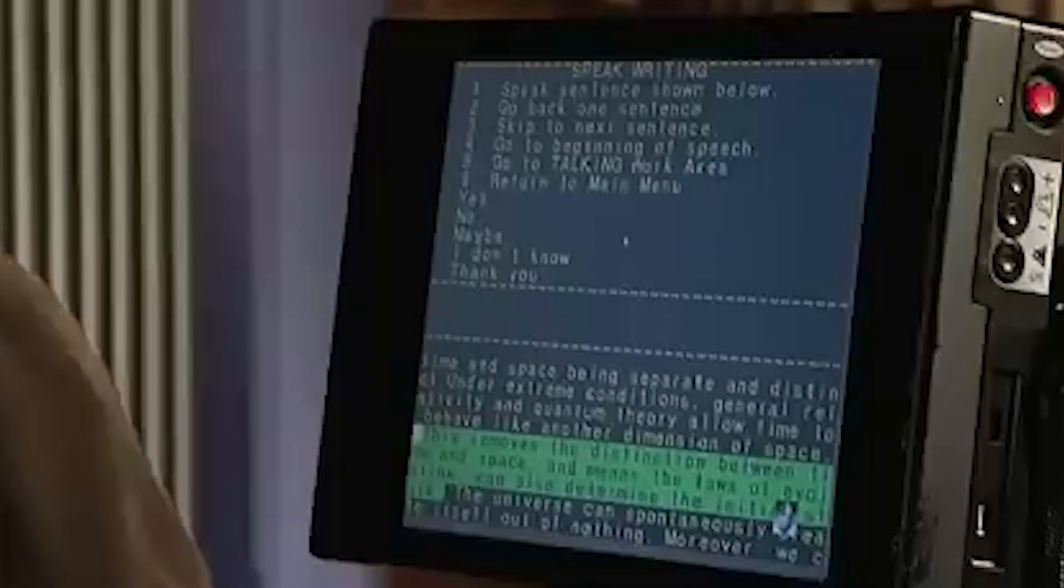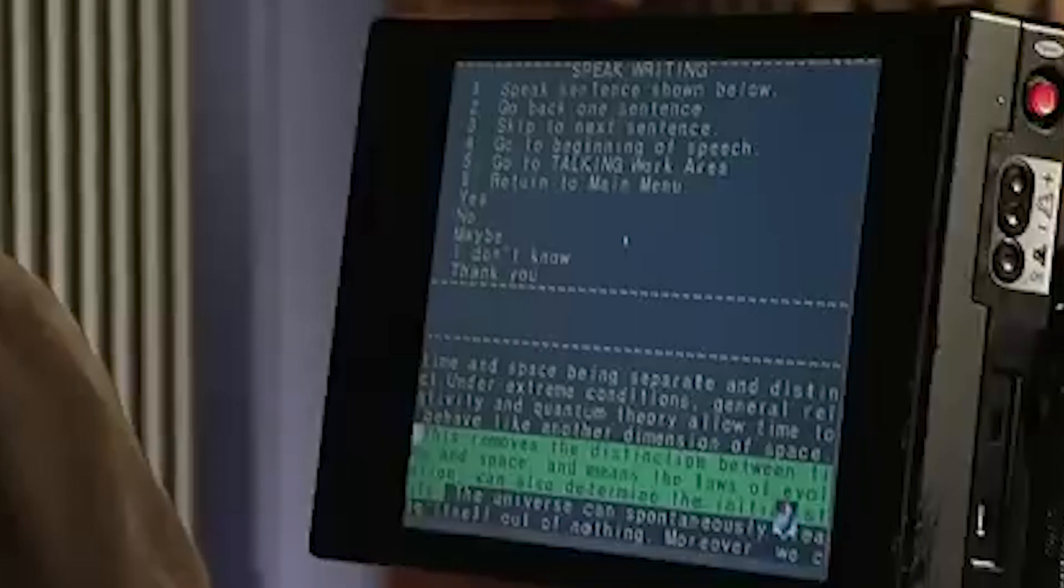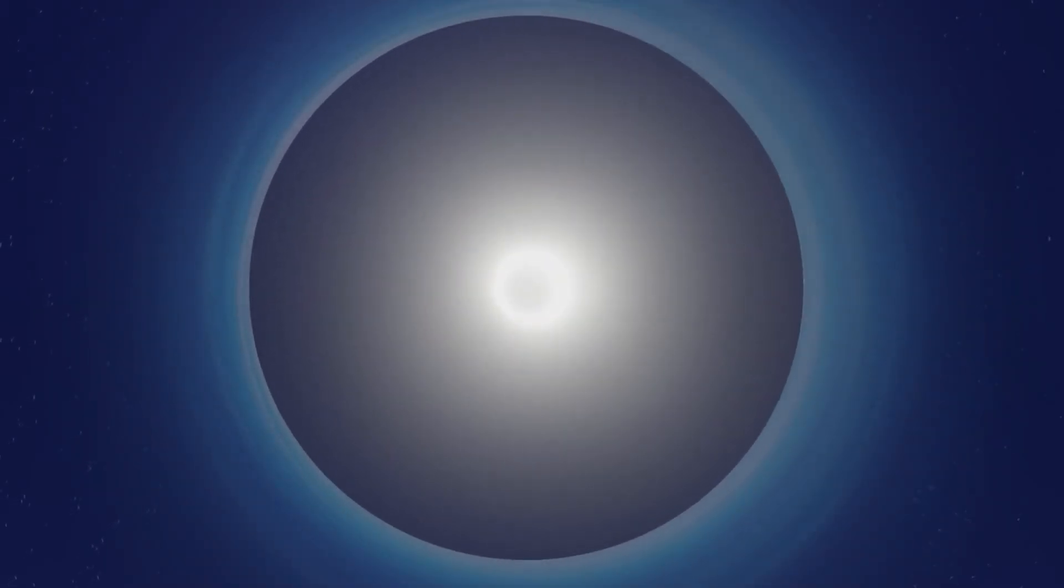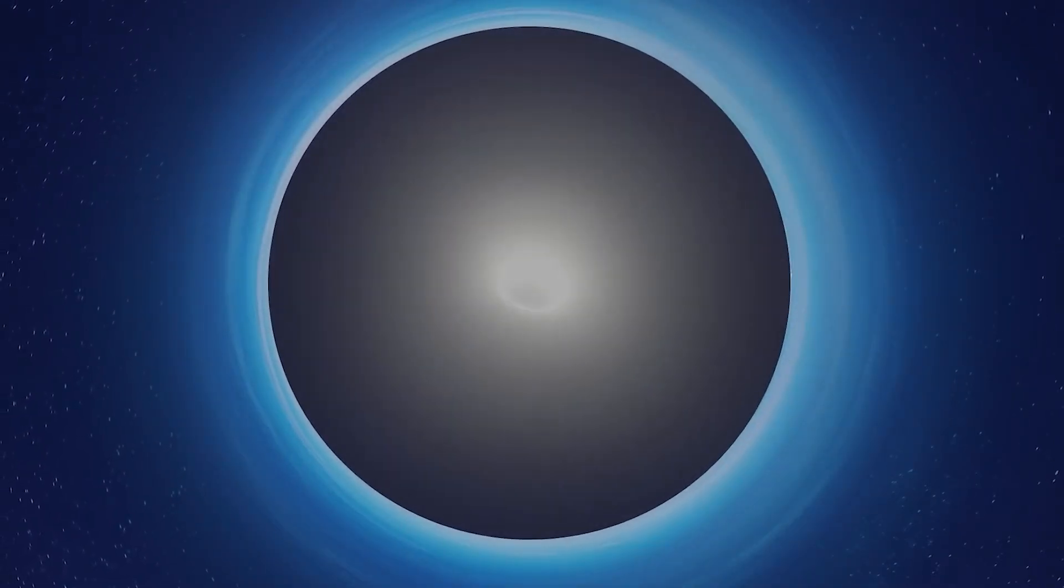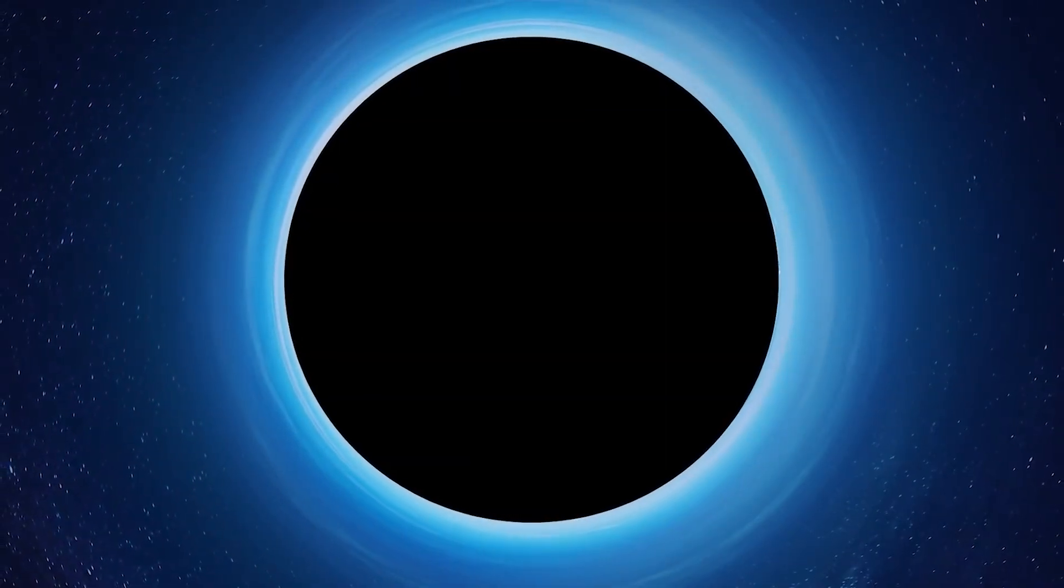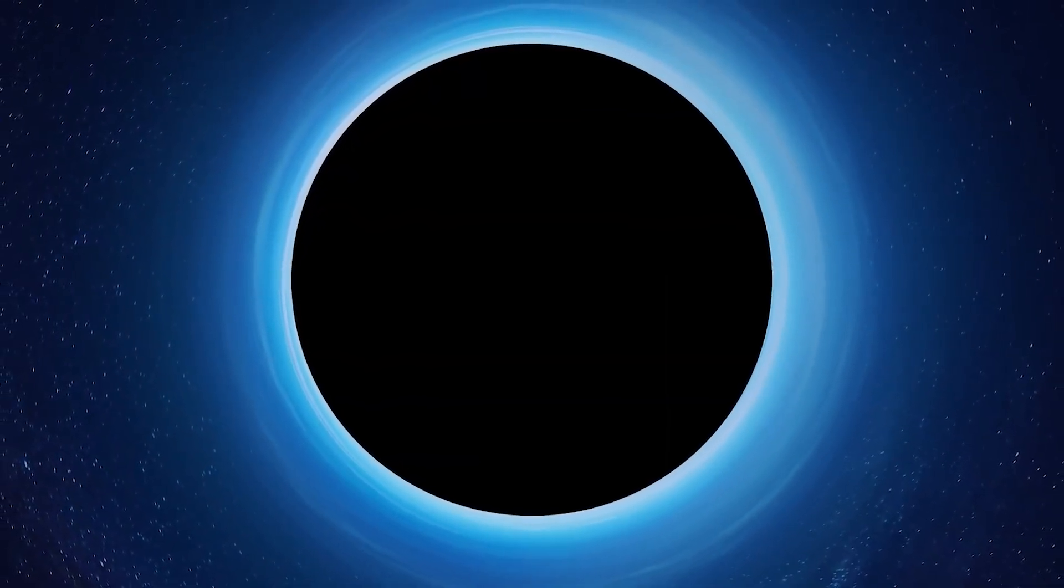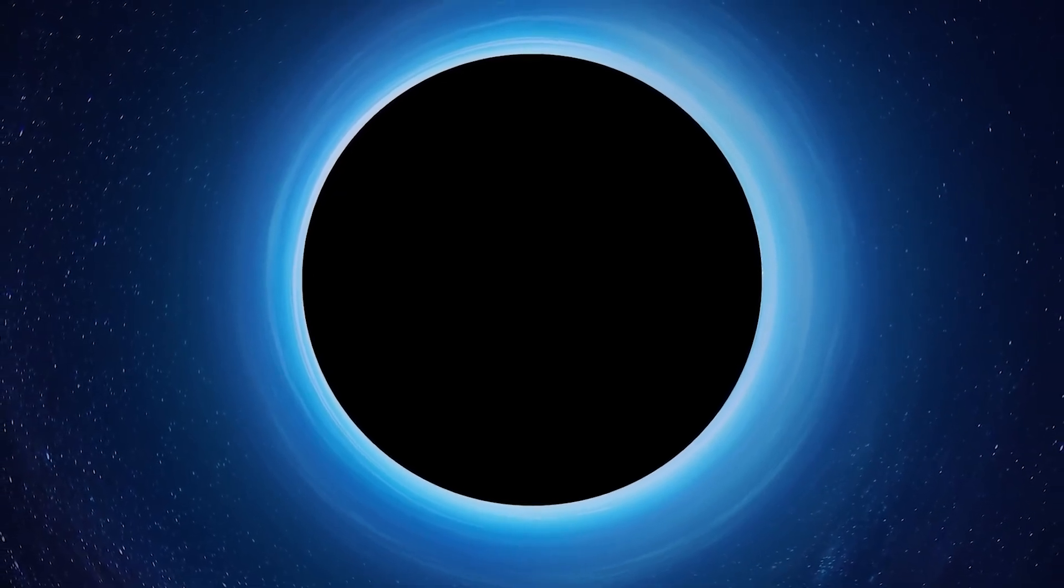The entire universe was once contained within an initial singularity, what we call the Big Bang. Black holes, in that sense, are not just the end point of matter, but also a mirror reflecting the beginning of the universe. With this, Einstein's absurdity became the centerpiece of cosmology. While theorists were coming to terms with this,